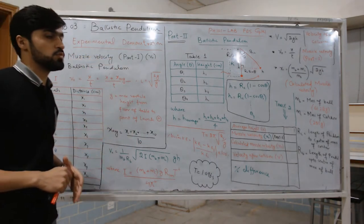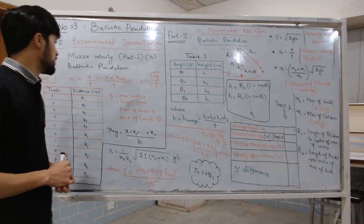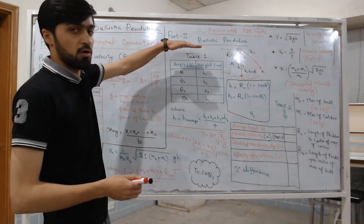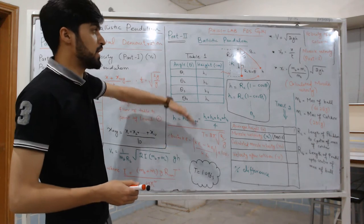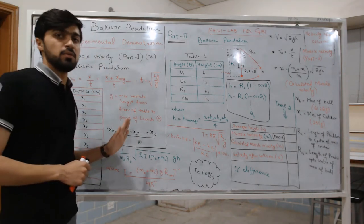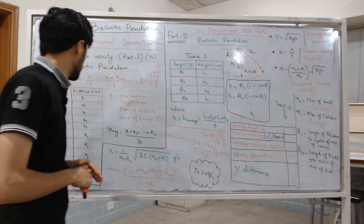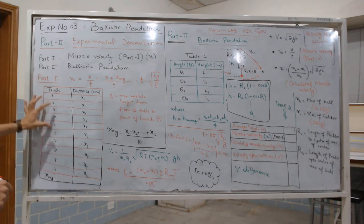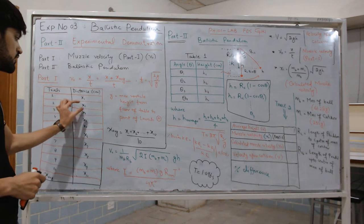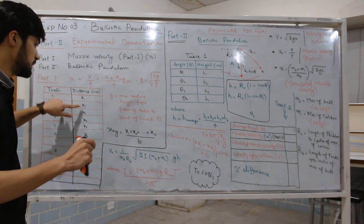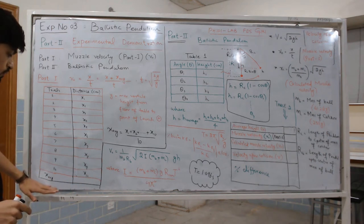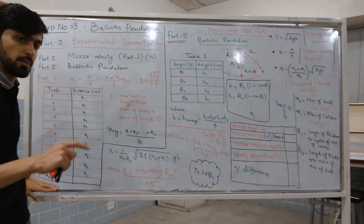The first part is the same as calculating the initial velocity in our very first experiment — we will not be using the ballistic pendulum here; the pendulum is moved above and locked. We repeat experiment number one: lock the ball, record horizontal distances x1, x2, x3 for multiple trials, and calculate x-average — the average distance of dots from the edge of the paper.